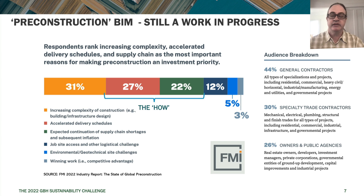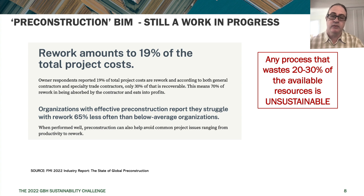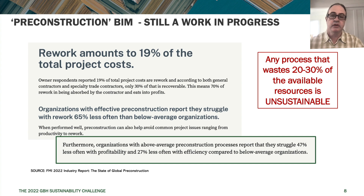FMI found that rework amounts to 19% of total project costs in their sample of almost a thousand contractors. That's not the only waste in the system. With nearly 20% rework plus additional waste, I've been claiming for the last ten years that there's 30% waste built into the engineer-to-order delivery system in construction — and nobody has really disputed that. It's almost commonly understood that that's the level of waste in the current engineer-to-order construction bidding and delivery process.